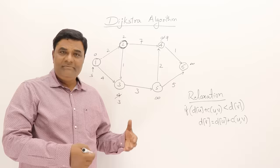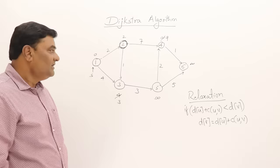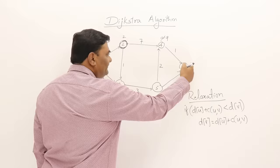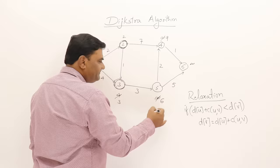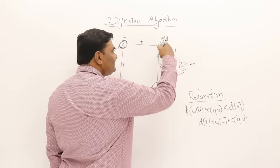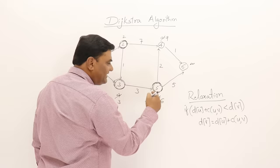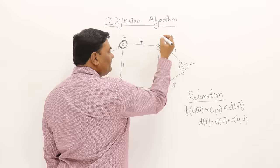Now the second step. Select the smallest one out of 3, 9, infinity, infinity — the smallest is 3, so select vertex 3. Check if any vertex gets relaxed — only one is connected: 3 plus 3 is 6, and that is infinity, so change it to 6. Now select the shortest out of 6, 9, infinity — the shortest is 6, so select that vertex. Check who is connected: 6 plus 2 is 8, and this is 9, so 8 is smaller, modify it. And 6 plus 5 is 11, and that is infinity, so modify it to 11.